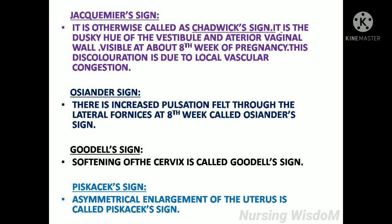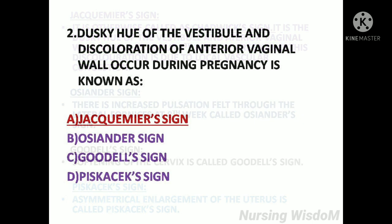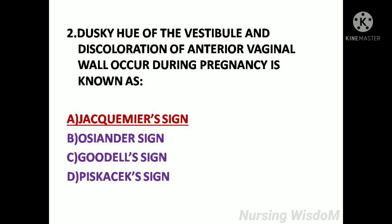Jacquemier's sign, otherwise called Chadwick sign, is the dusky hue of the vestibule and anterior vaginal wall, visible at about the 8th week of pregnancy due to local vascular congestion. Osiander sign is increased pulsation felt through the lateral fornices at 8 weeks. Goodell's sign is softening of the cervix. Piskacek's sign is symmetrical enlargement of the uterus. The answer is Option A: Jacquemier's sign.